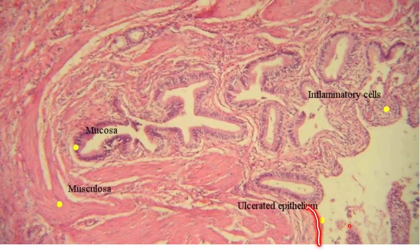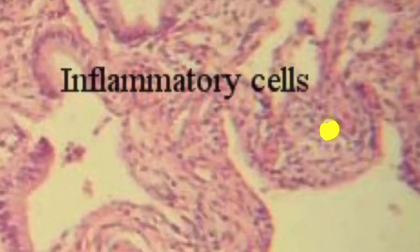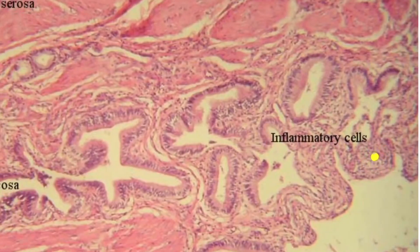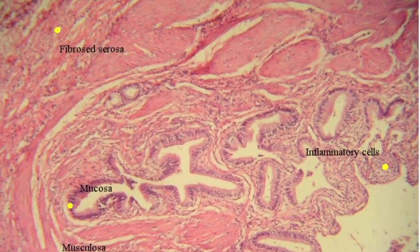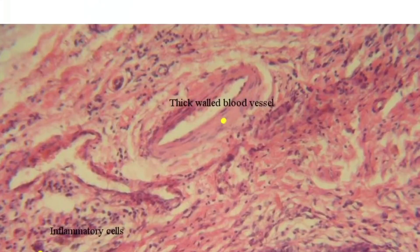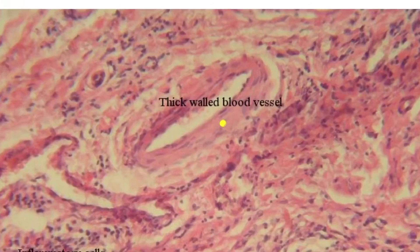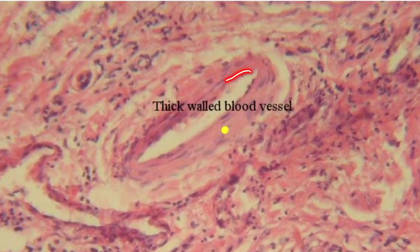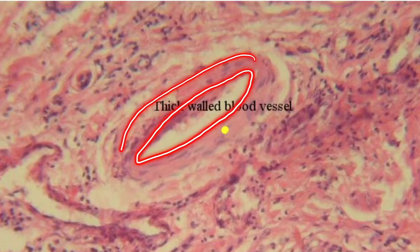Here you can see this is the ulcerated epithelium — the formation of the ulcer in the epithelium. Next, you can see those are the inflammatory cells. Here also you can see the thick-walled blood vessel — this is the inner wall and this is the outer wall of the blood vessel.